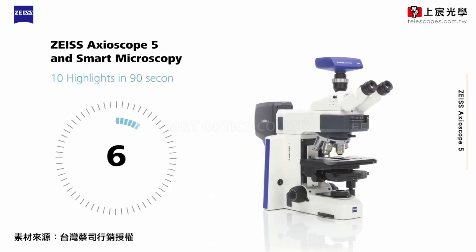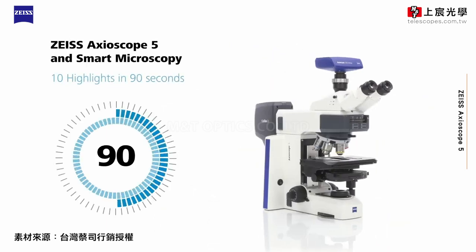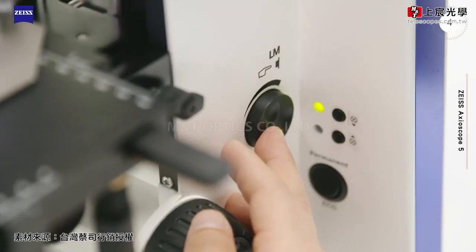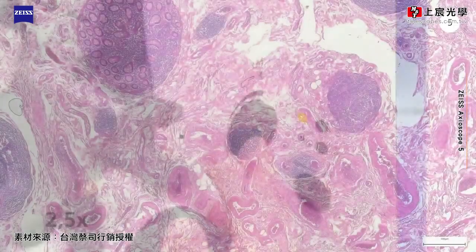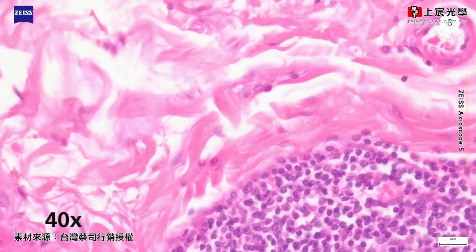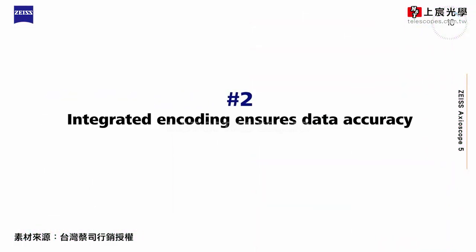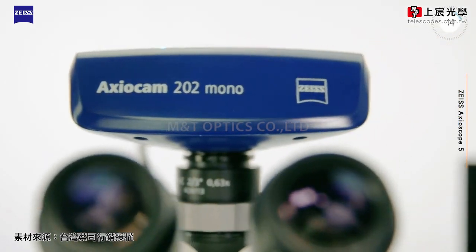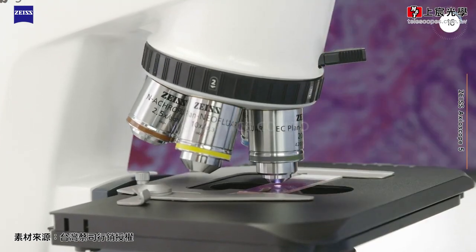Zeiss Axioscope 5 and smart microscopy: 10 highlights in 90 seconds. The light manager memorizes the individually set light intensity per objective and provides uniform brightness at all magnifications. Axioscope 5 offers integrated encoding of nosepiece, reflector turret, and LED light sources.